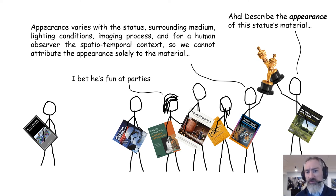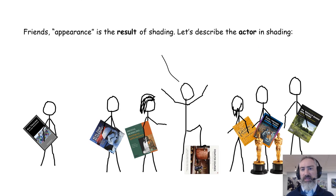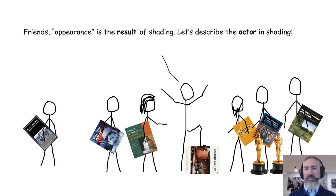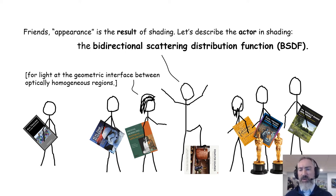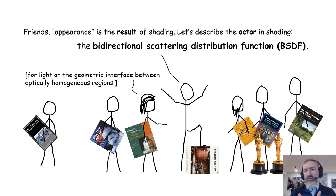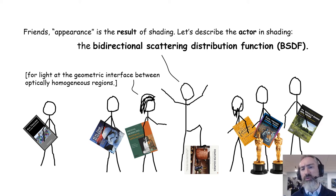Our conclusion was to actually abandon trying to define materials and appearance at all, and focus on something else. Appearance is the result of shading. We're better served in rendering by describing the key actor in shading, which is the bidirectional scattering distribution function, abbreviated BSDF. And that's not a property of an object — it's an emergent property of an interface between two optically homogeneous media. In practice it is common to attach a BSDF to specific geometry or an object, but we want to recognize that that's not true in the general case. The BSDF will change with the surrounding medium.